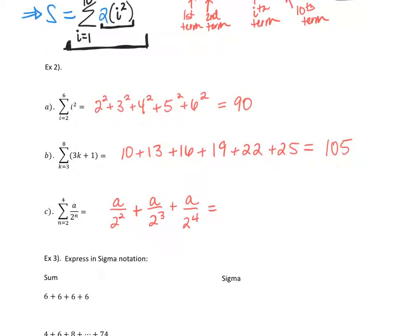For the first one, i starts at 2, so you should have started at 2 squared, and it ends at 6, so your last term is 6 squared. You should have had a total of 5 terms adding up to 90.